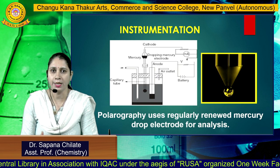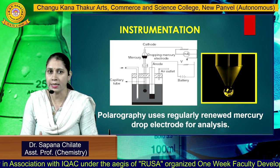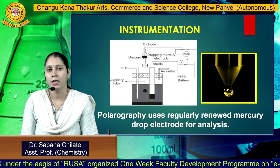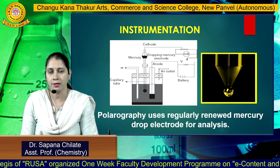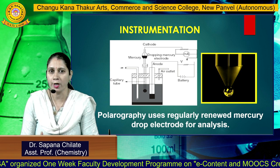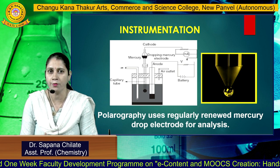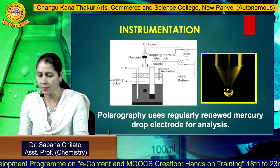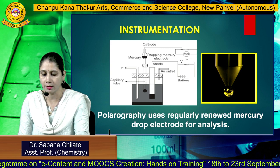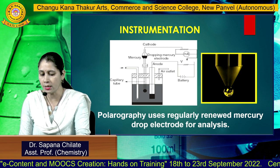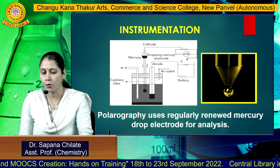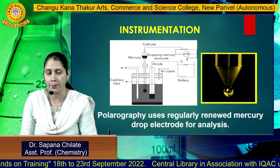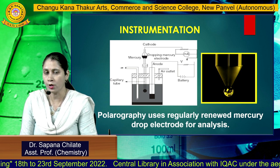This is the instrumentation in which the electrolytic cell is developed between the two electrodes. The cathode here is the polarizable electrode, which is the dropping mercury electrode. Another electrode is the saturated calomel electrode, which acts as the reference electrode. The electrolytic cell is developed in such a way that nitrogen gas is passed into the electrolytic solution in order to remove the dissolved oxygen if present. This entire system is called the electrochemical cell.